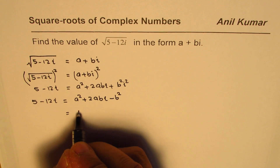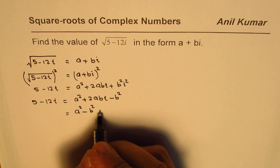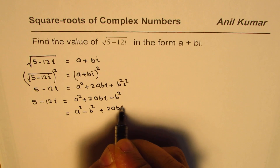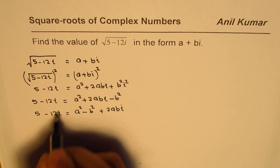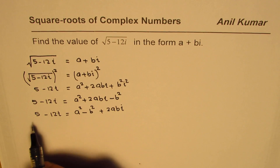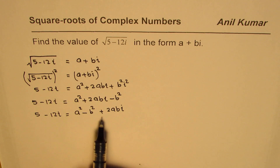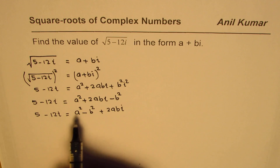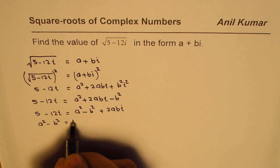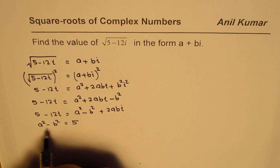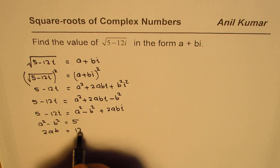On the right side we can combine a squared with minus b squared to get the real part, and the imaginary part is 2abi. So we have 5 minus 12i equals a squared minus b squared plus 2abi. Now comparing the real and imaginary parts: we get a squared minus b squared equals 5, and we get 2ab equals negative 12.